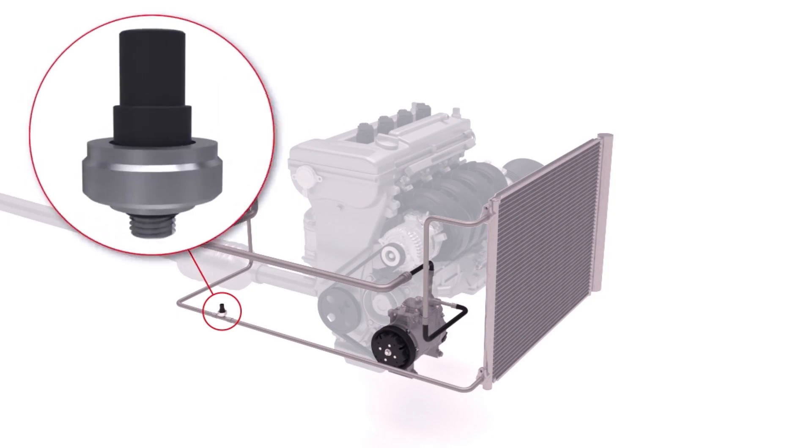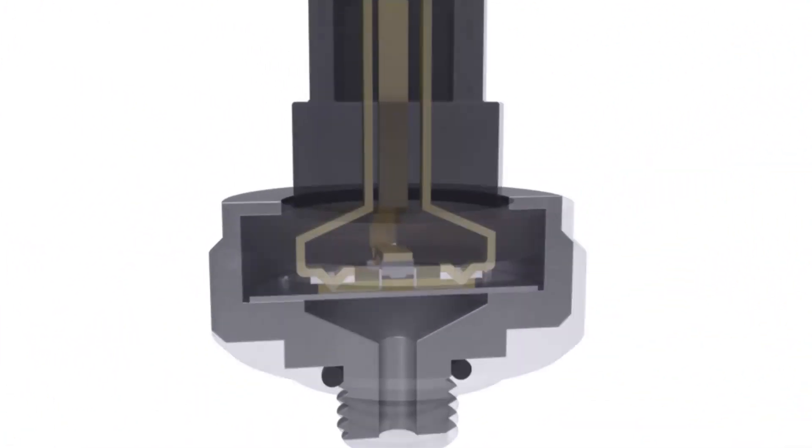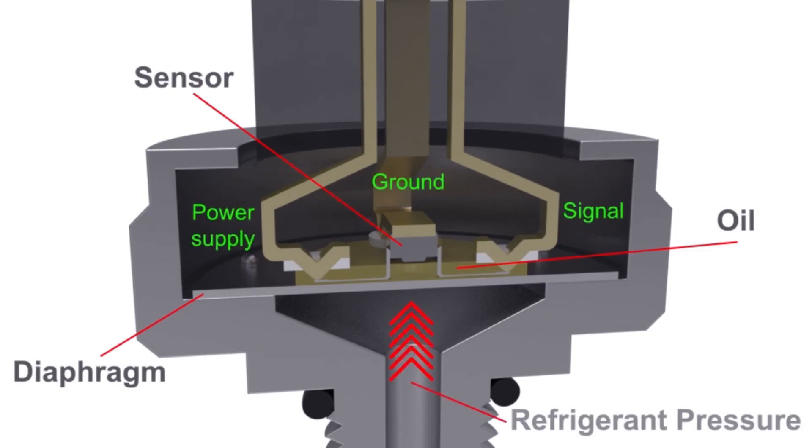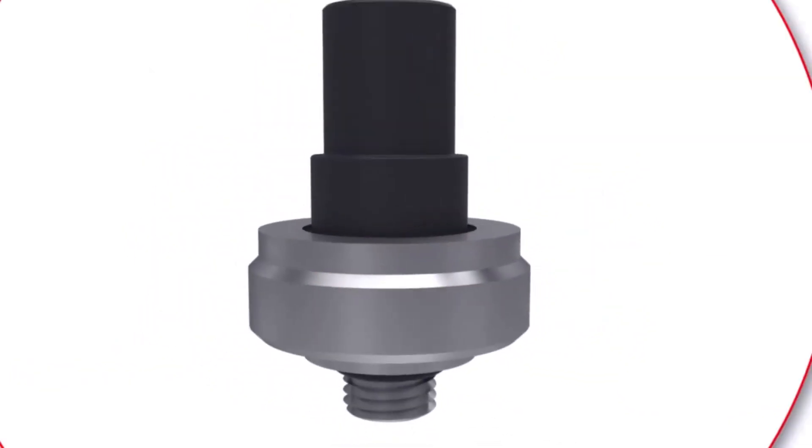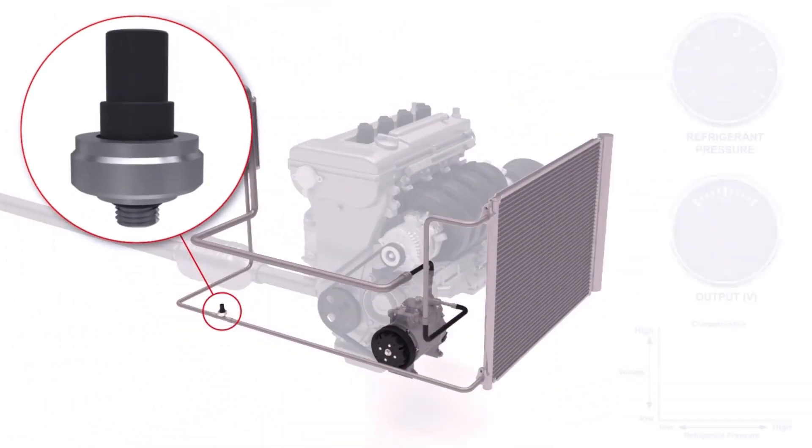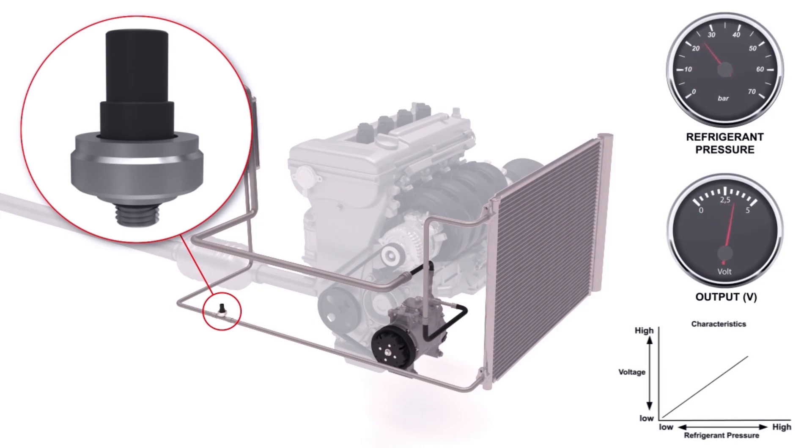One final and important component fitted to Denso air conditioning systems is the pressure sensor that is used as a simple safety device. The sensor detects the refrigerant pressure on the high pressure side between the condenser and the expansion valve. So, if the pressure is incorrect, which could cause damage to the system components, the compressor can be switched off.